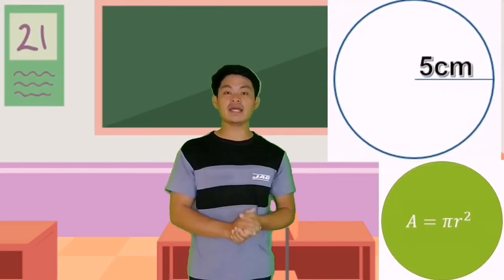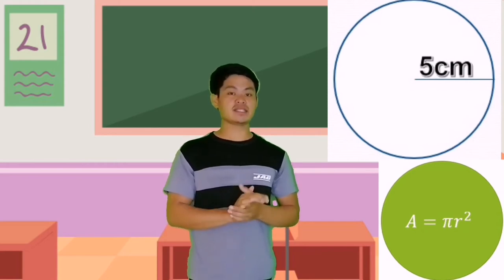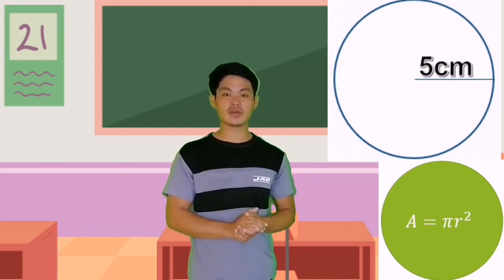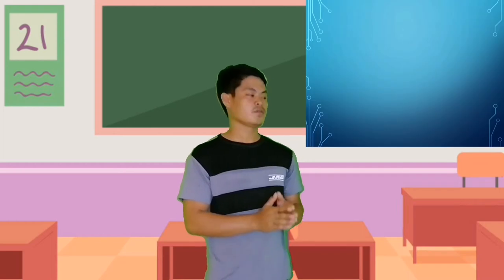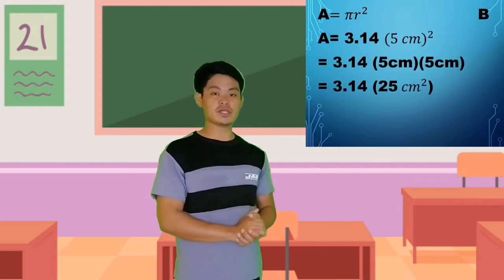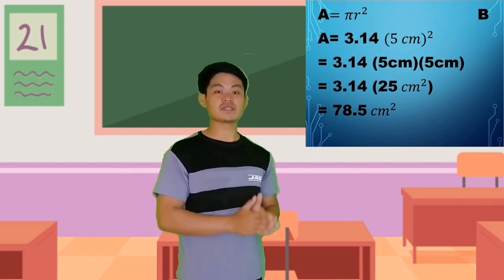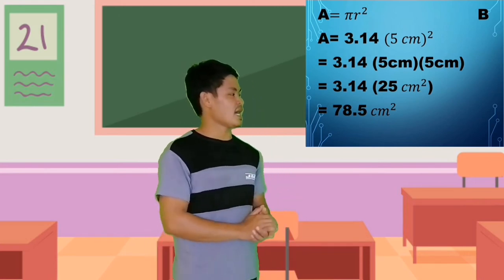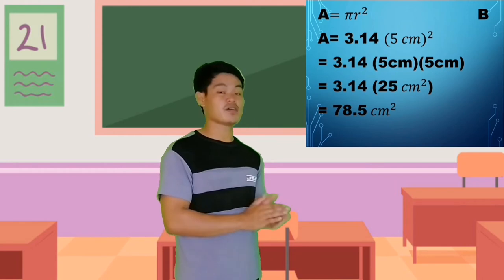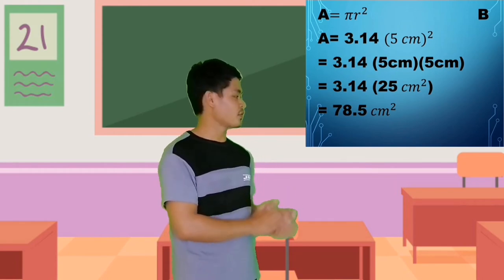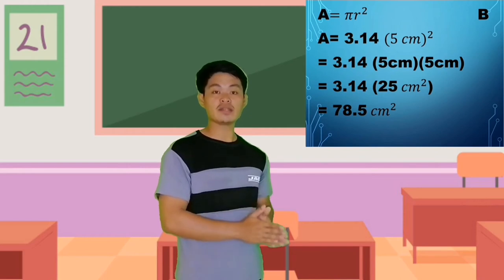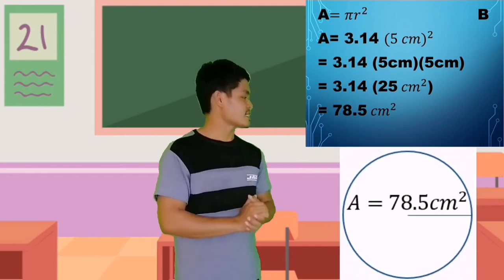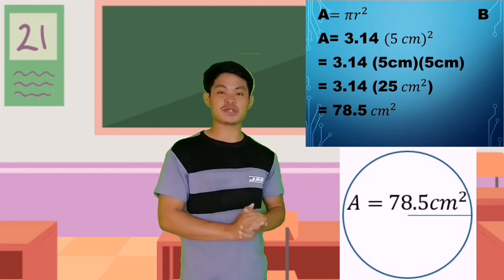For shape B, the circle, area equals pi r squared, where pi is 3.14 and the radius is 5 cm. So area equals 3.14 times 5 cm squared, which is 3.14 times 25 cm squared. Therefore, the area of the circle is 78.5 cm squared.